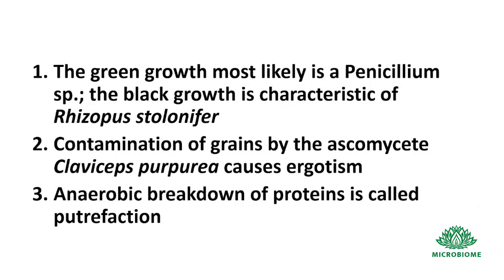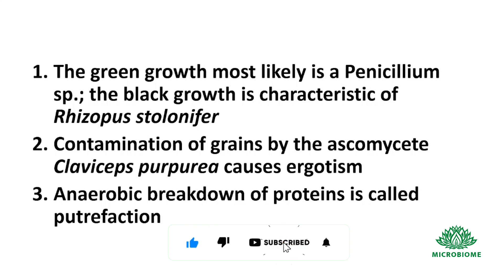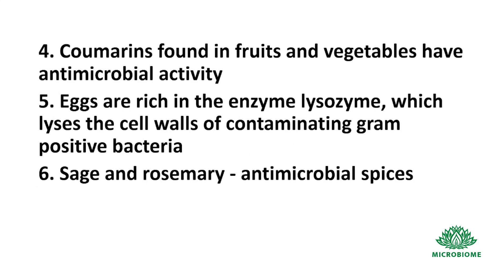Green growth is the characteristic of Penicillium species and black growth is the characteristic of Rhizopus stolonifer. Contamination of grains by the ascomycete Claviceps purpurea causes ergotism. Anaerobic breakdown of proteins is called putrefaction. Coumarins found in fruits and vegetables have antimicrobial activity.